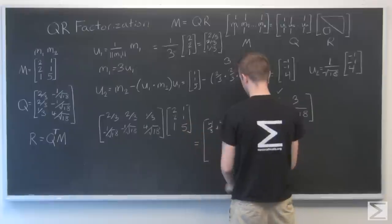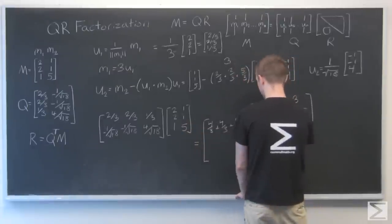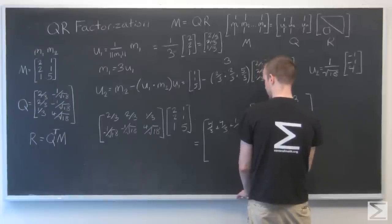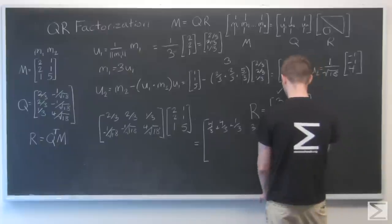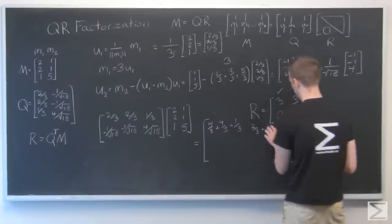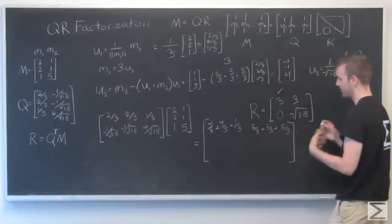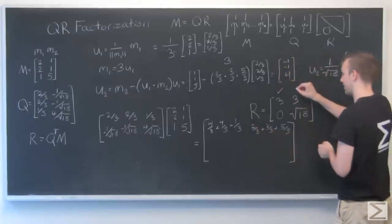This times that, we get this entry. 2/3 times 1, 2/3. 2/3 times 1, 2/3. 1/3 times 5, 5/3. 2/3 plus 2/3 plus 5/3, that's 9/3. Hey, that's 3. We got that right.